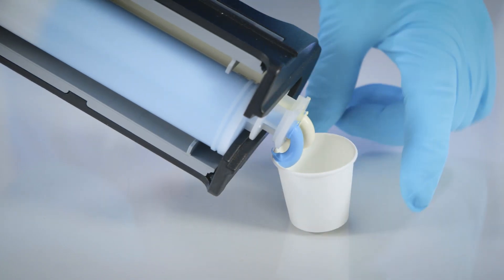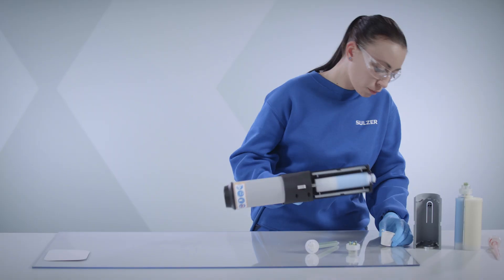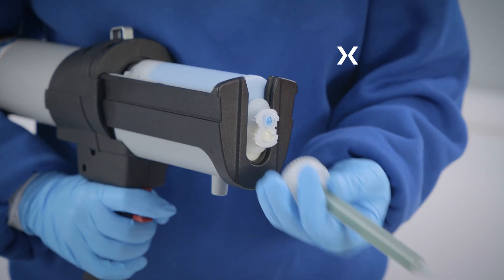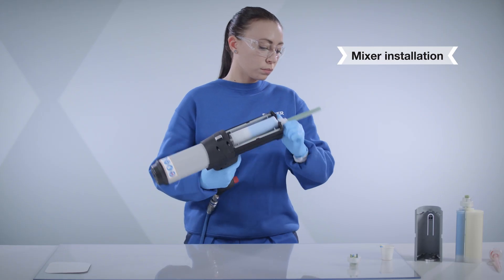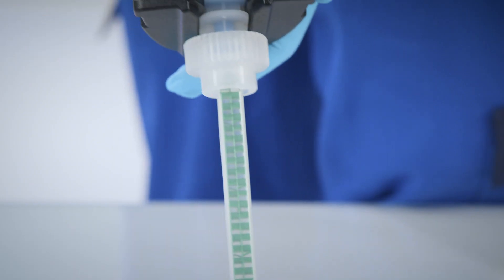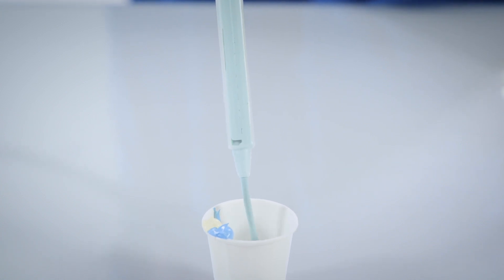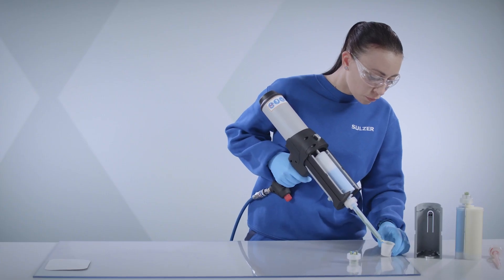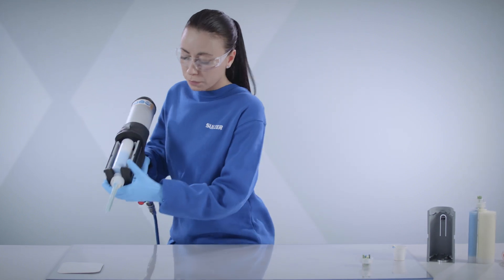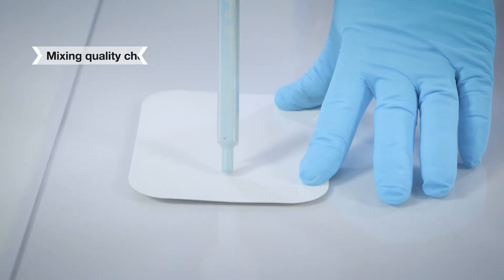Clean excess material from the cartridge and install mixer and bayonet ring. Dispense a small amount into a waste cup to verify mix quality, color, and consistency. For best practice, before starting, dispense one mixer length to ensure mixing quality.